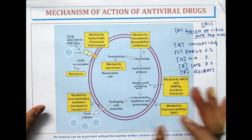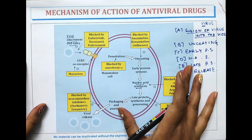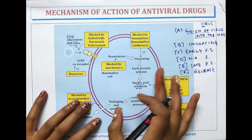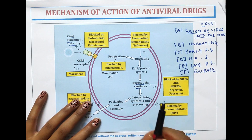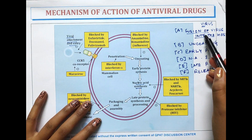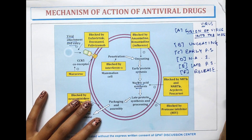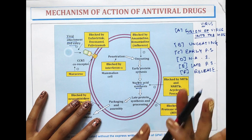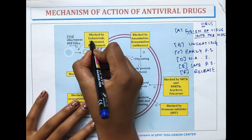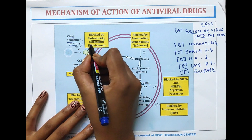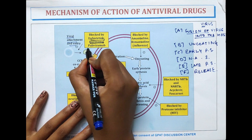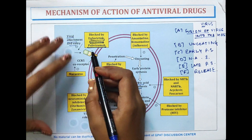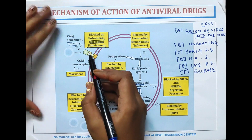Now the drugs which act on these steps — this is the overview of drugs acting on viral replication. The first step was fusion of virus into host cells. The drugs which act on this step are enfuvirtide, docosanol, and palivizumab. These three drugs inhibit the entry or fusion of virus.